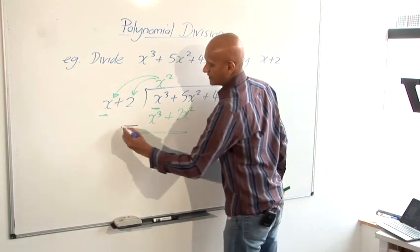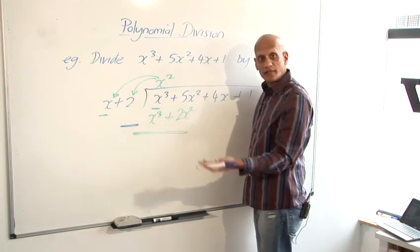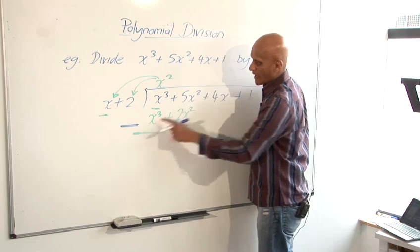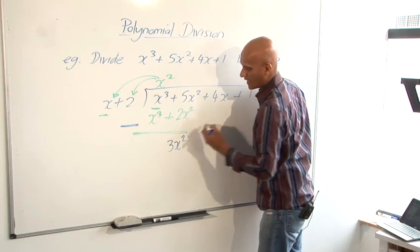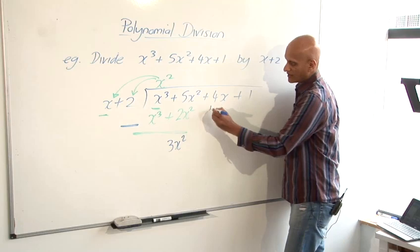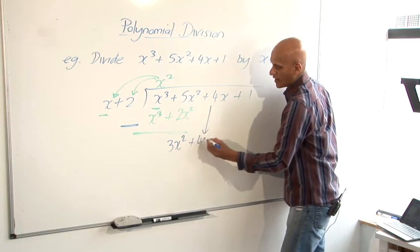I subtract. x cubed minus x cubed is going to give me 0. 5x squared minus 2x squared is going to give me 3x squared. Bring down the next term, plus 4x.